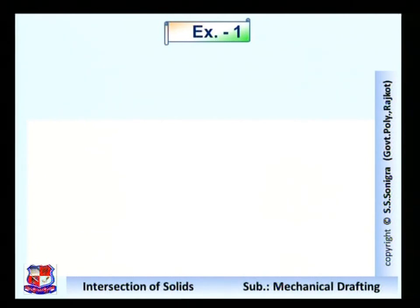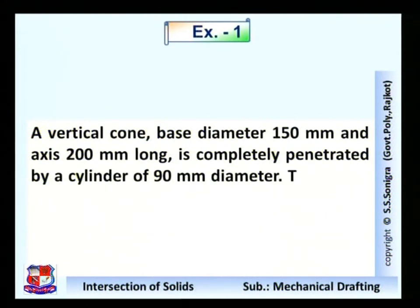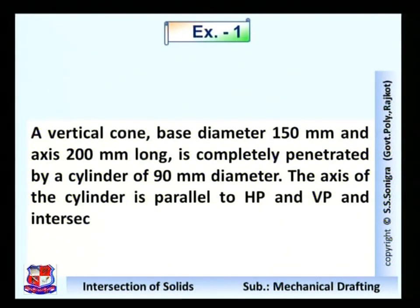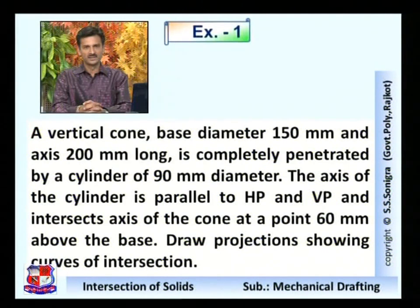We discussed the fundamentals of this topic in an earlier session. Today we will just solve the problems. The data of the first problem is: a vertical cone with base diameter 150 mm and axis 200 mm long is completely penetrated by a cylinder of 90 mm diameter. The axis of the cylinder is parallel to HP and VP, and intersects the axis of the cone at a point 60 mm above the base. Draw projections showing curves of intersection.